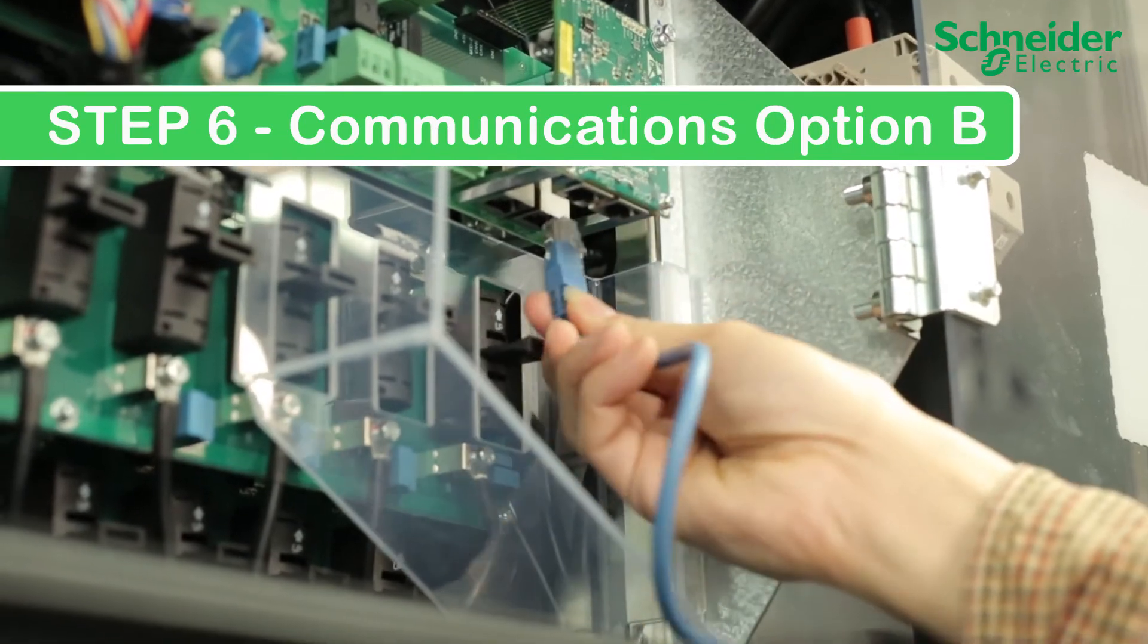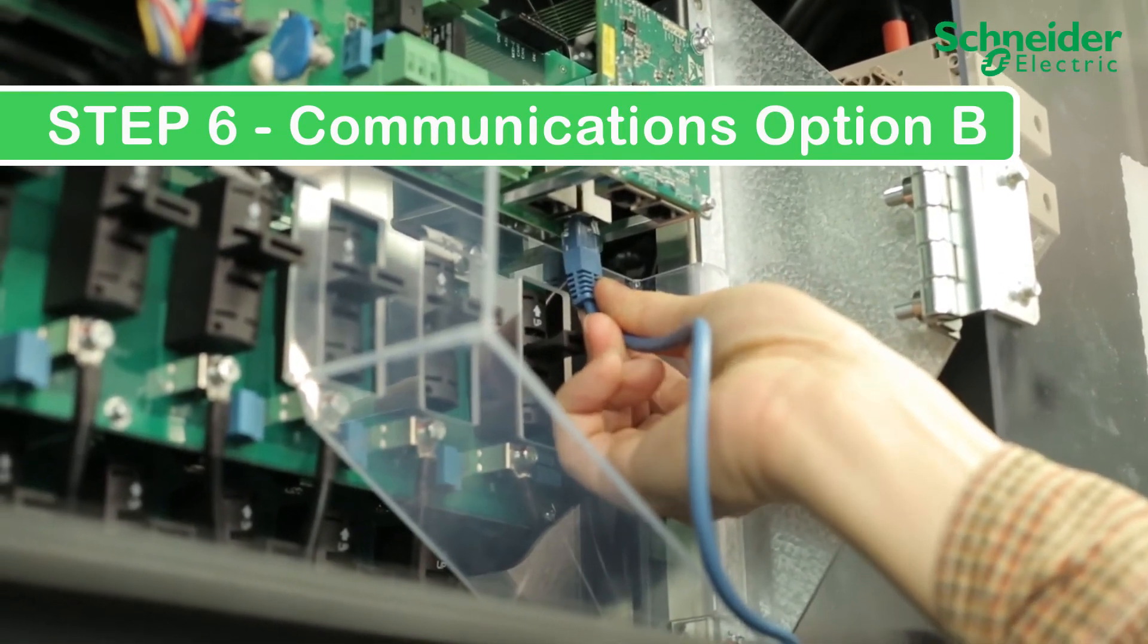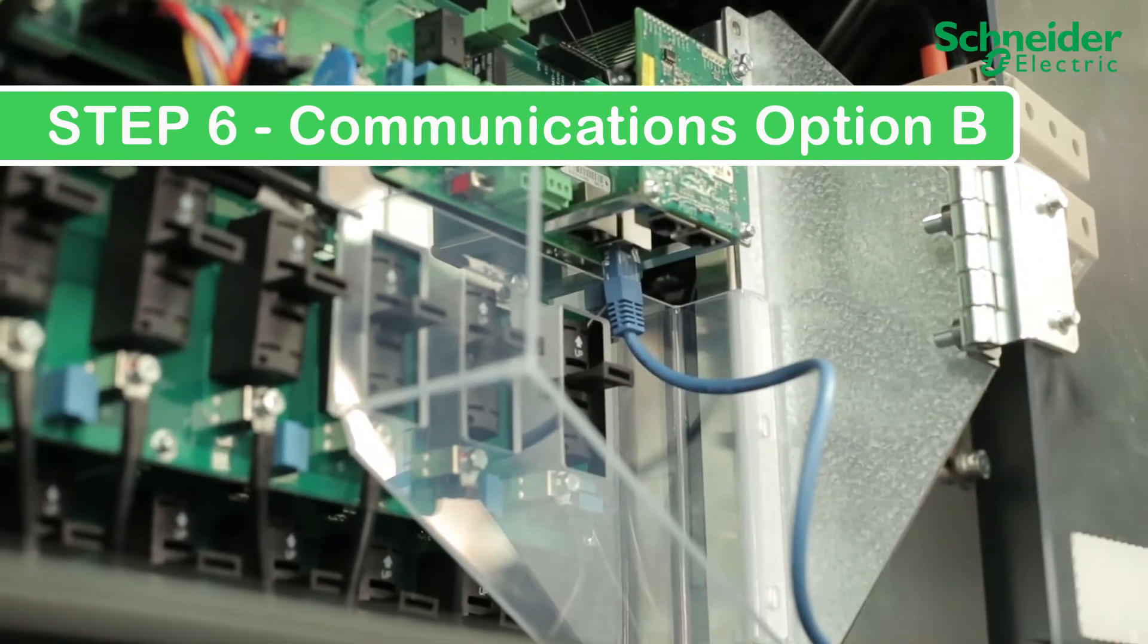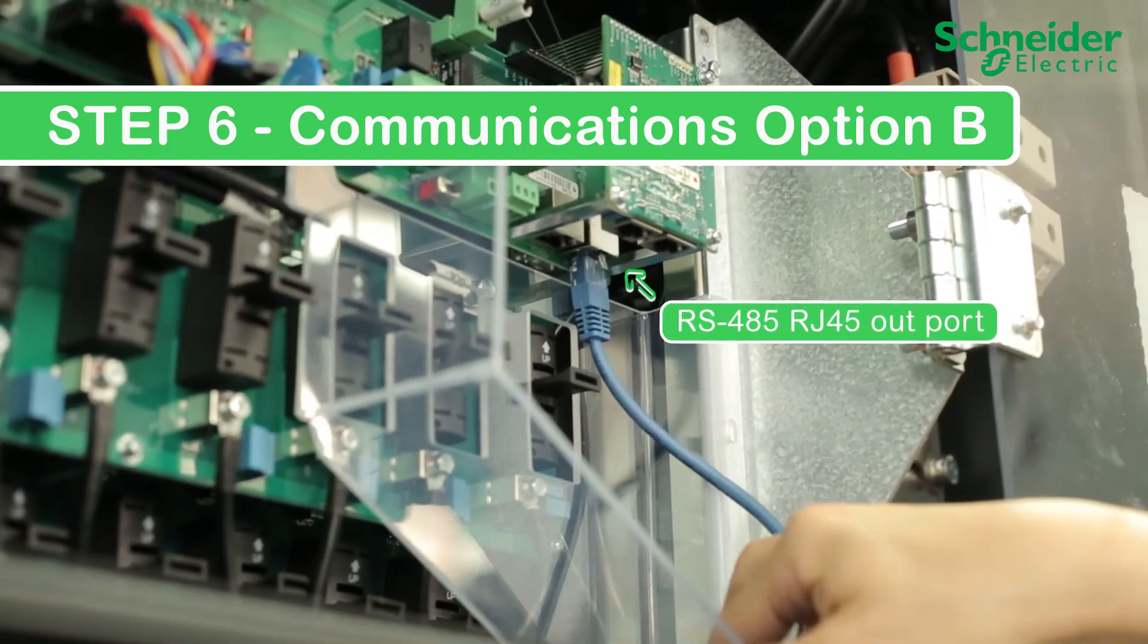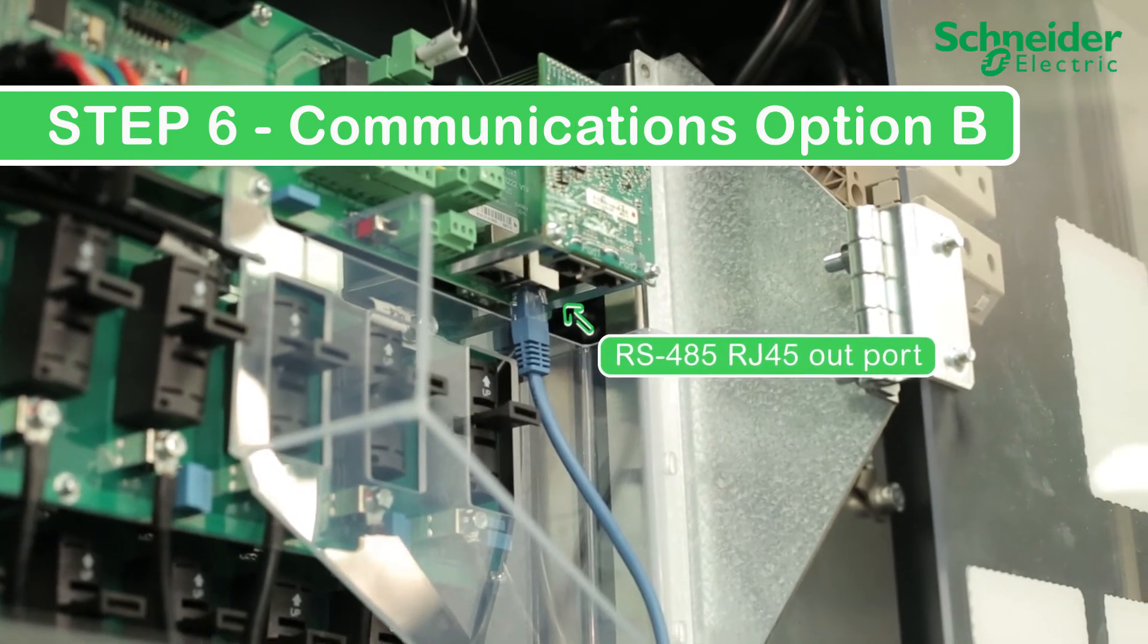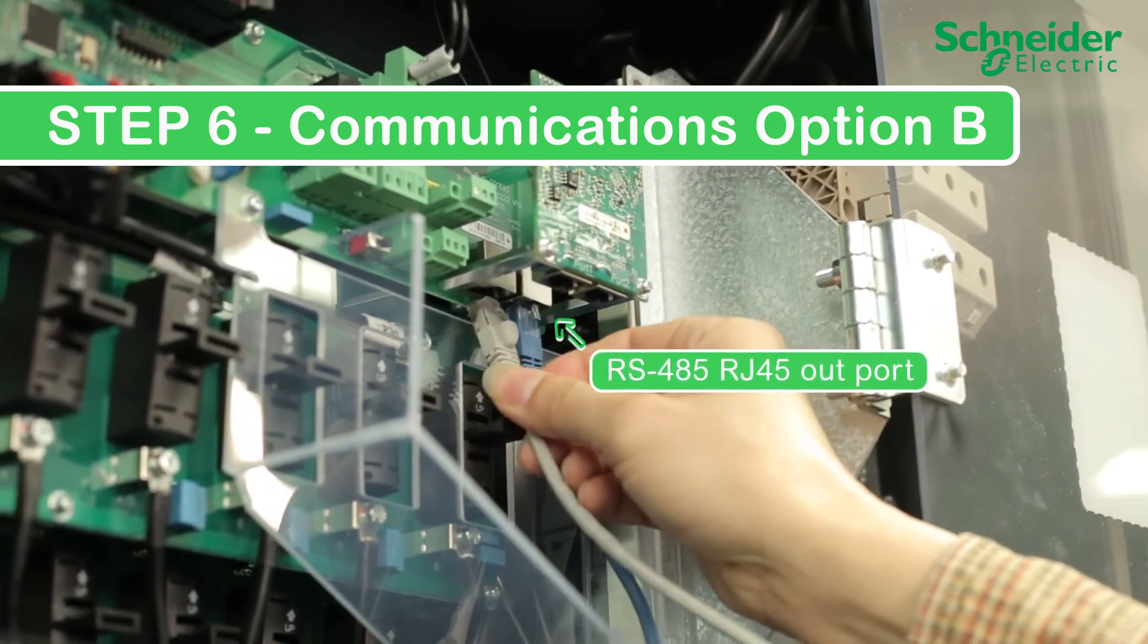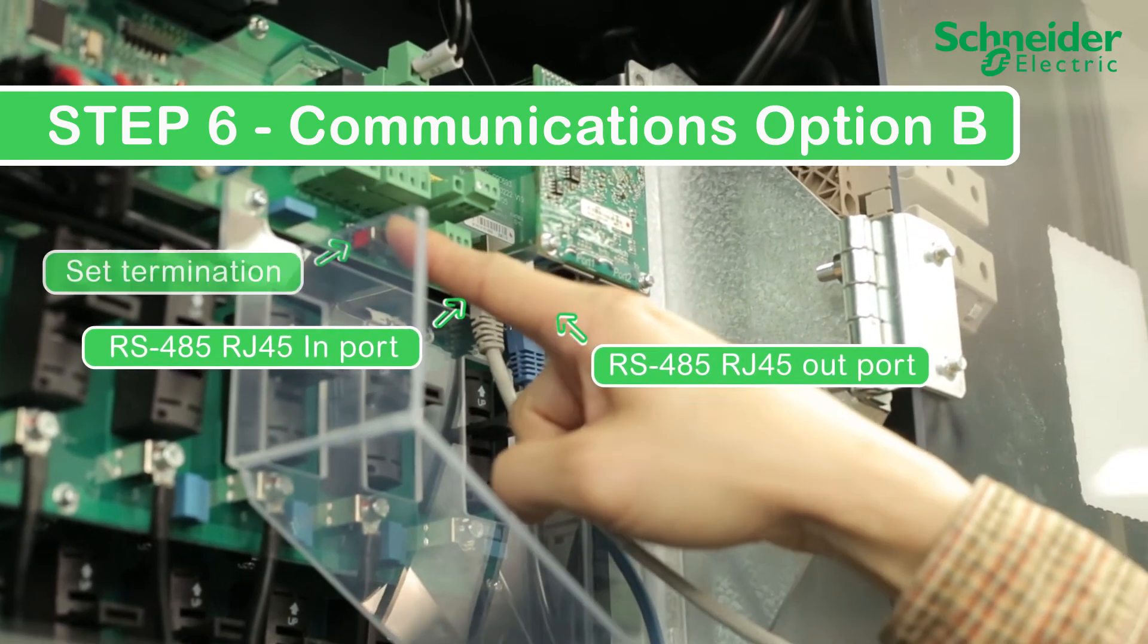Step 6: Communications option B. Make your RS485 connection using RJ45 connectors. For end of daisy chain connections, connect the out port. And if more than 14 units are in the RS485 daisy chain, set the terminator to on. For mid-string CL60s in a daisy chain, connect the second cable to the in port and ensure the terminator is set to off.